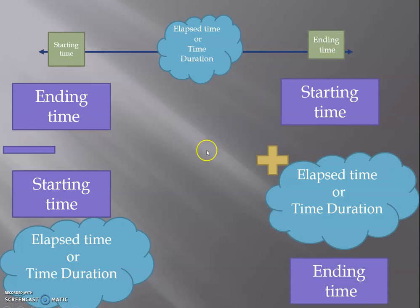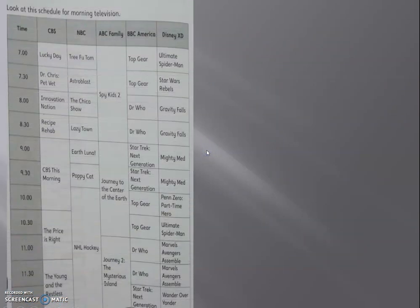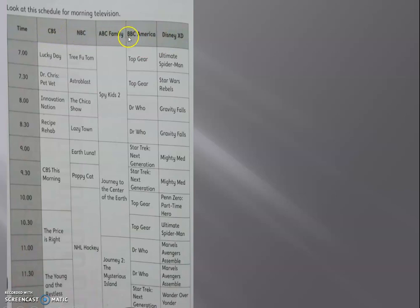Now let's go to our two pages in the workbook. The first page shows us the TV programs. We have five channels: CBS, NBC, ABC Family, BBC America, and Disney XD. By the way, I like Disney Junior, not Disney XD, but some programs here I like.